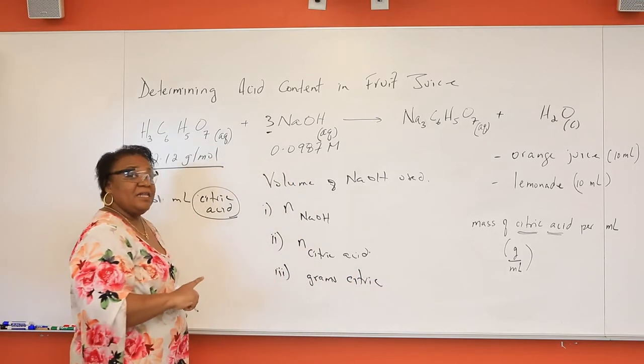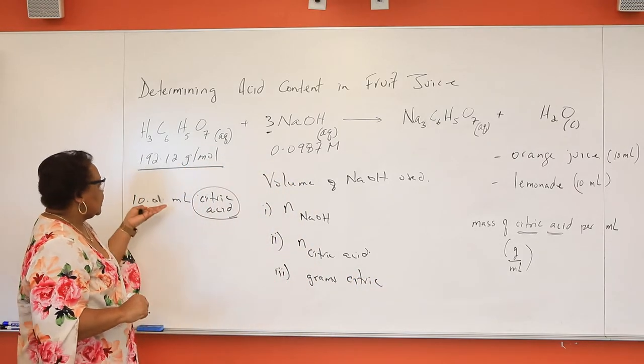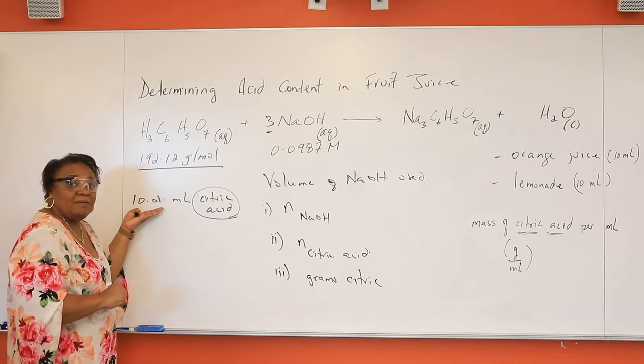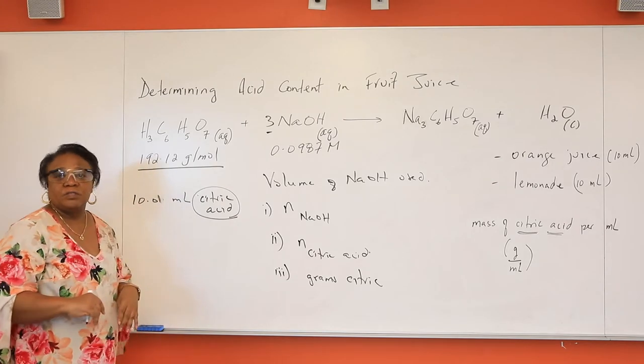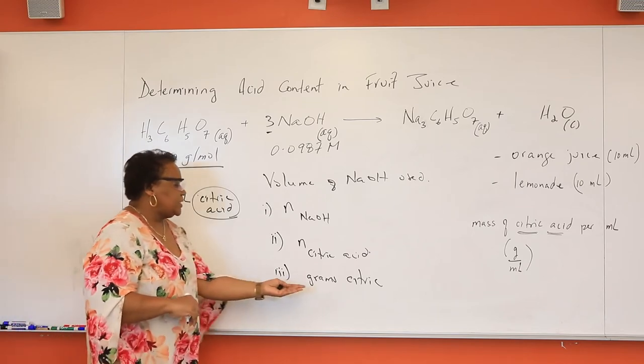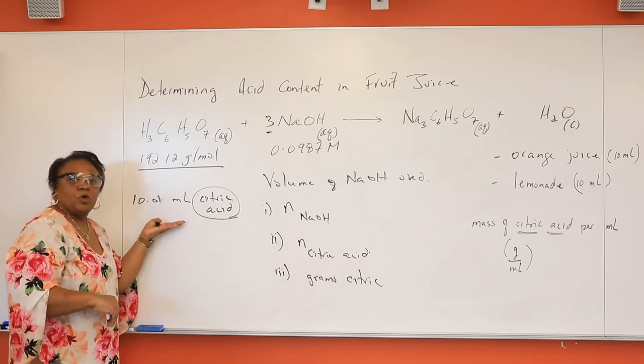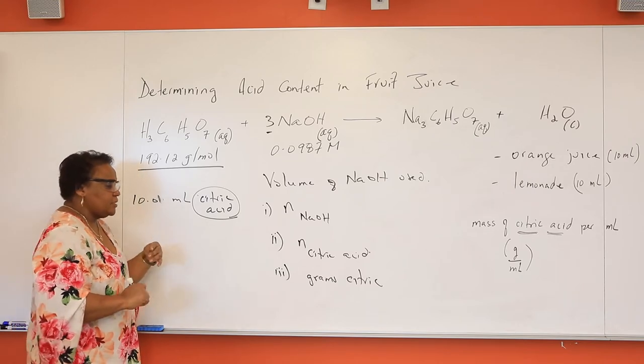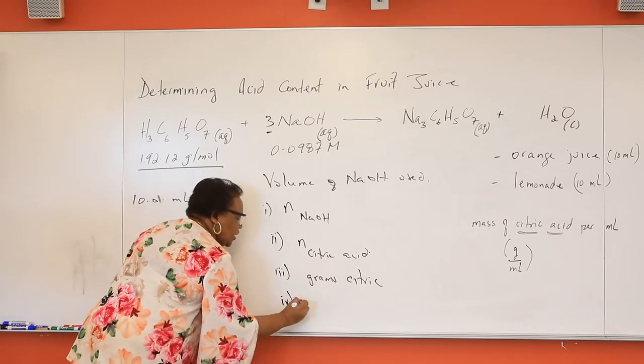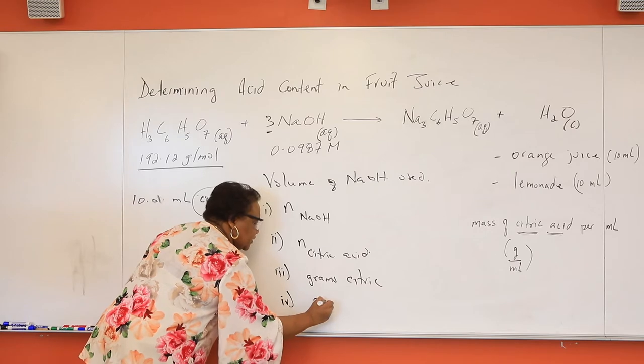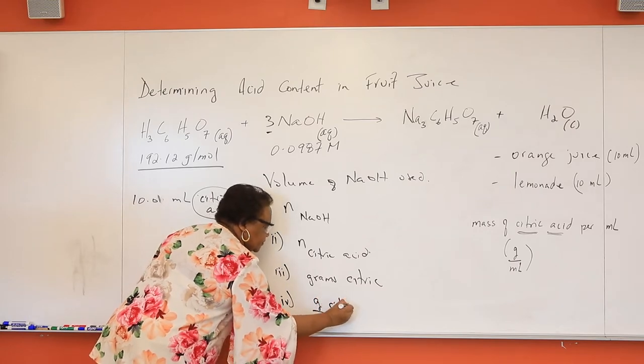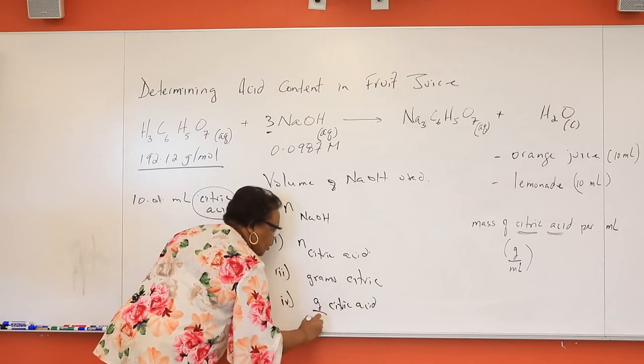However, that's the grams of citric acid in 10 mLs. So how are you going to find the grams per mL? You're going to take this mass and divide it by our total volume, 10 mLs. And then at the end, you can report the grams of citric acid per mL.